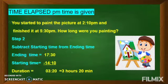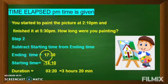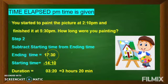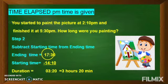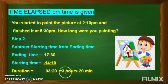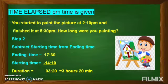Step 2 is to subtract the starting time from the ending time. Ending time is 17:30 and starting time is 14:10. Minutes subtracted from minutes: 30 minus 10 is 20 minutes, and 17 minus 14 is 3. So the duration — the time that you spent for painting — was 3 hours 20 minutes.